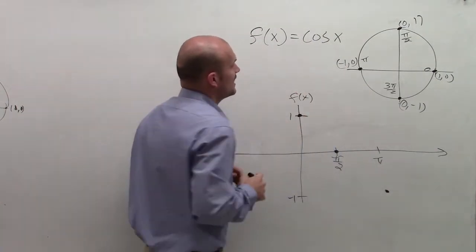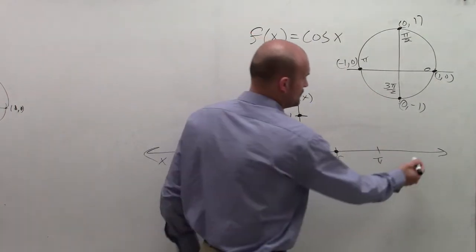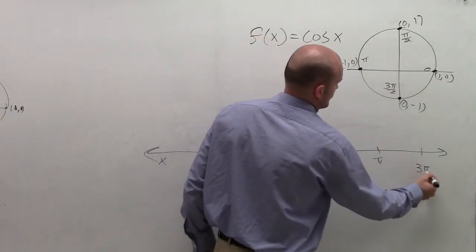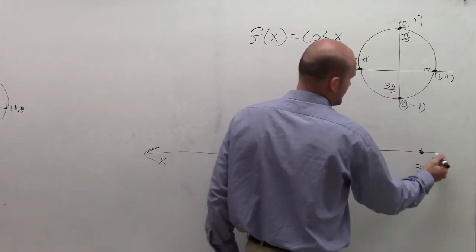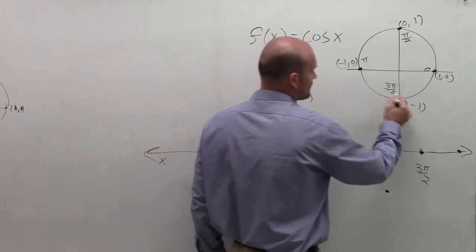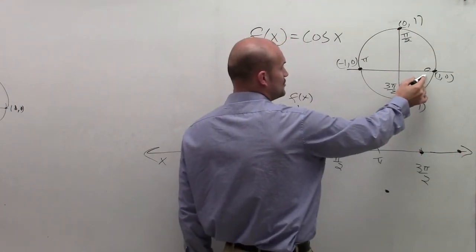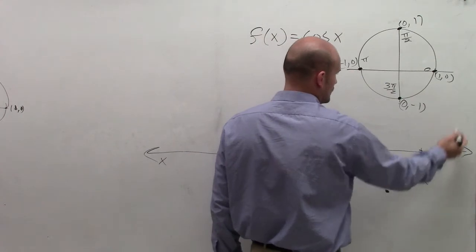Then at cosine of 3π/2, I am back up to 0. And I need a little bit more space. And then at cosine of 2π, I'm back up at 1.